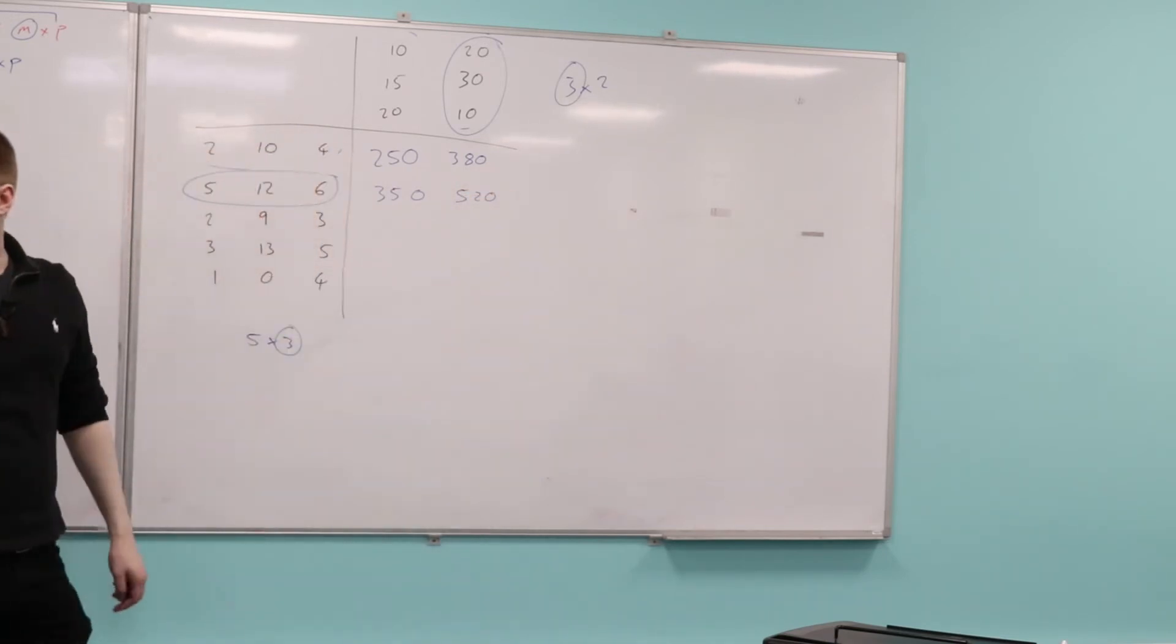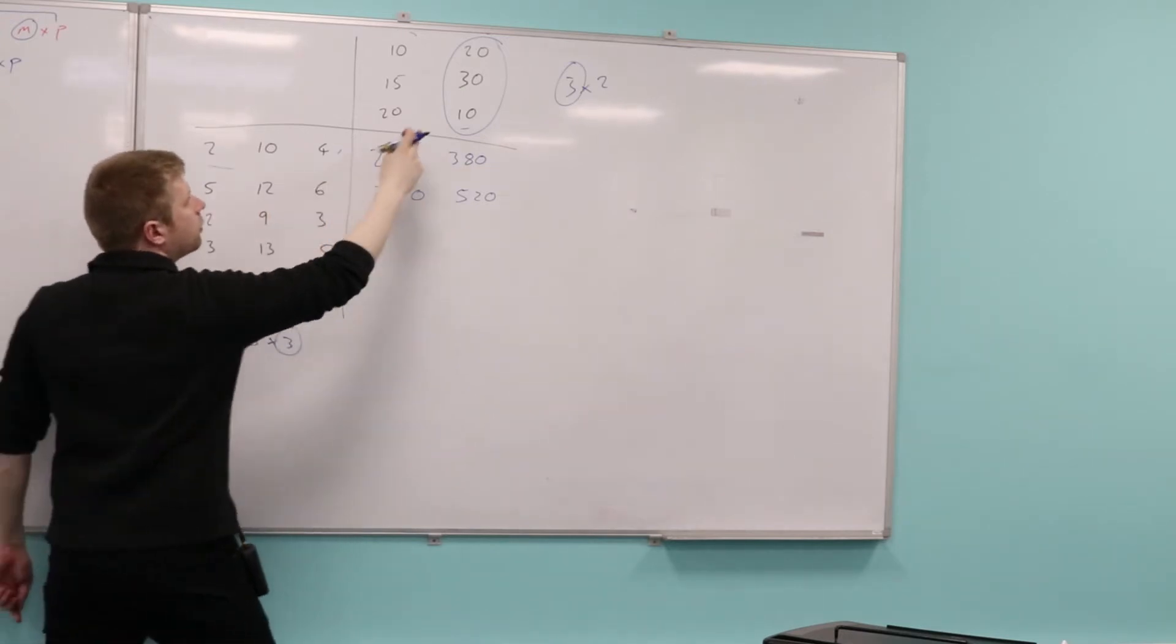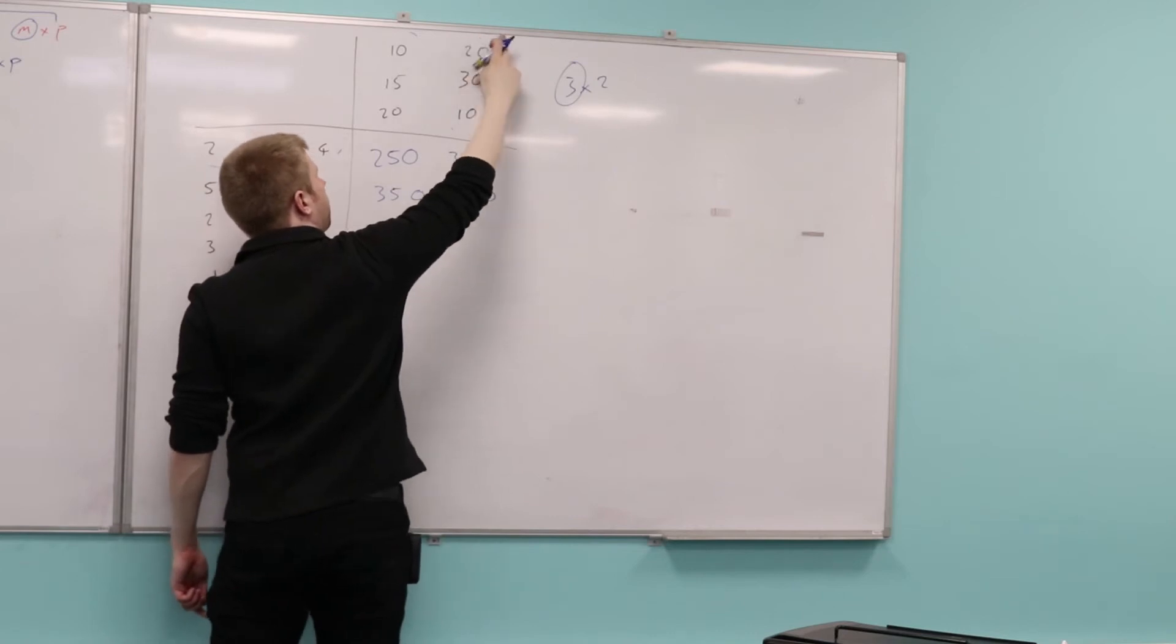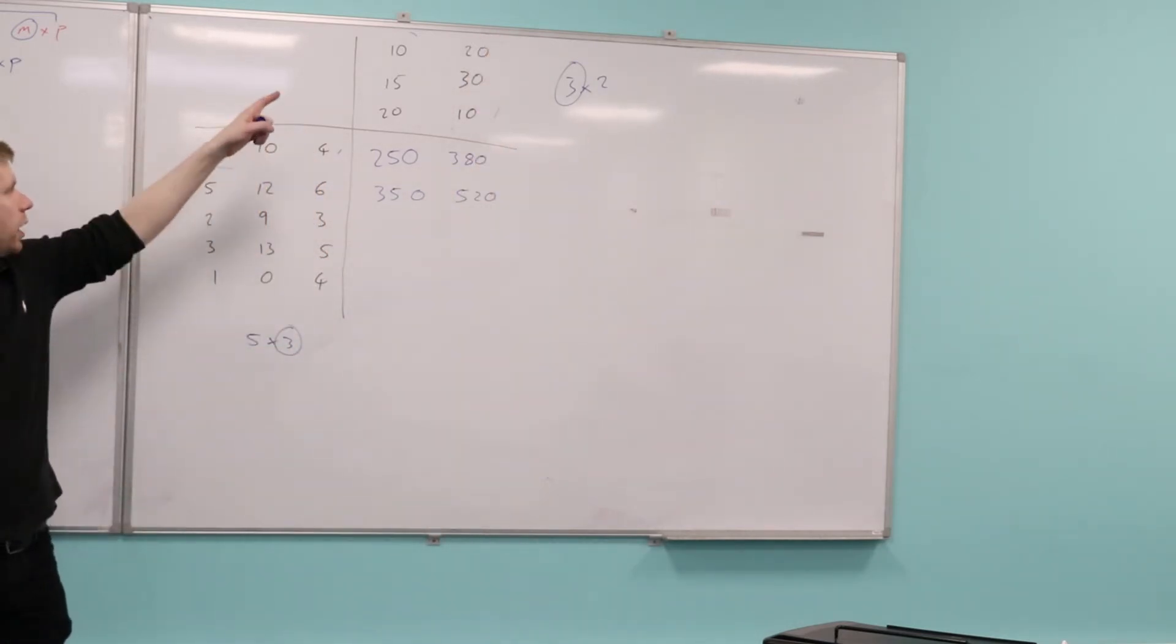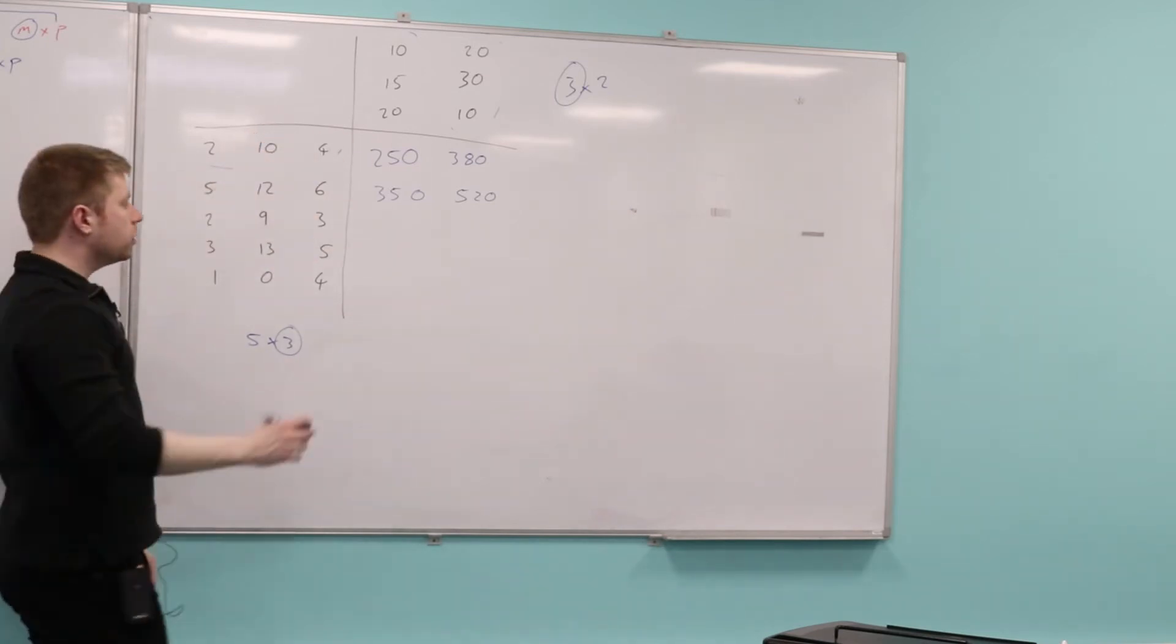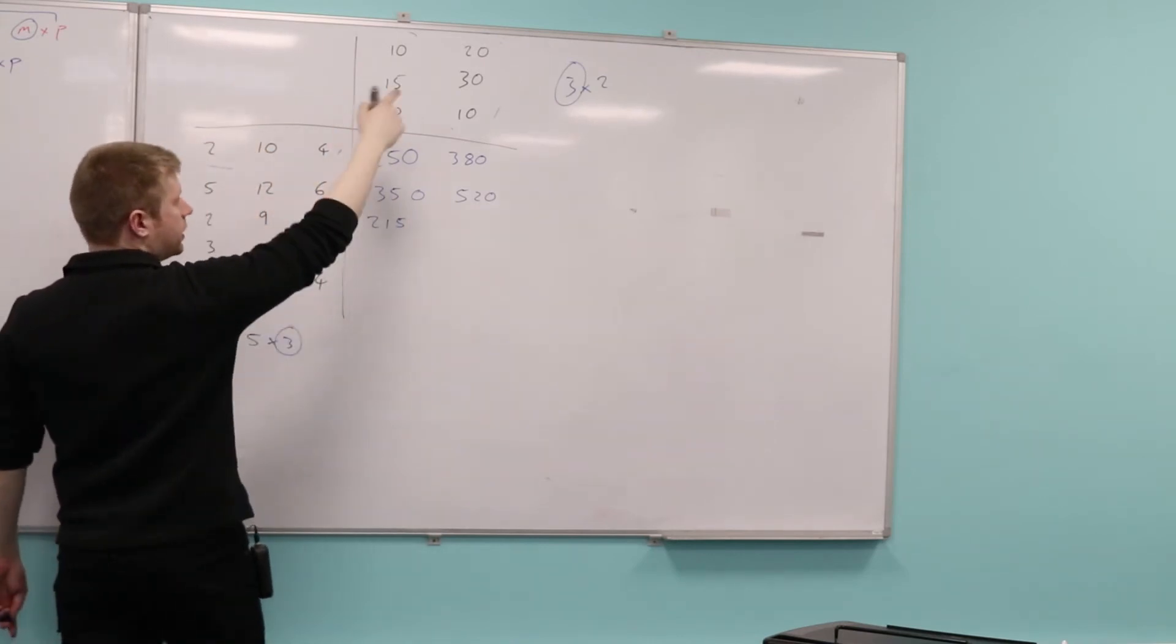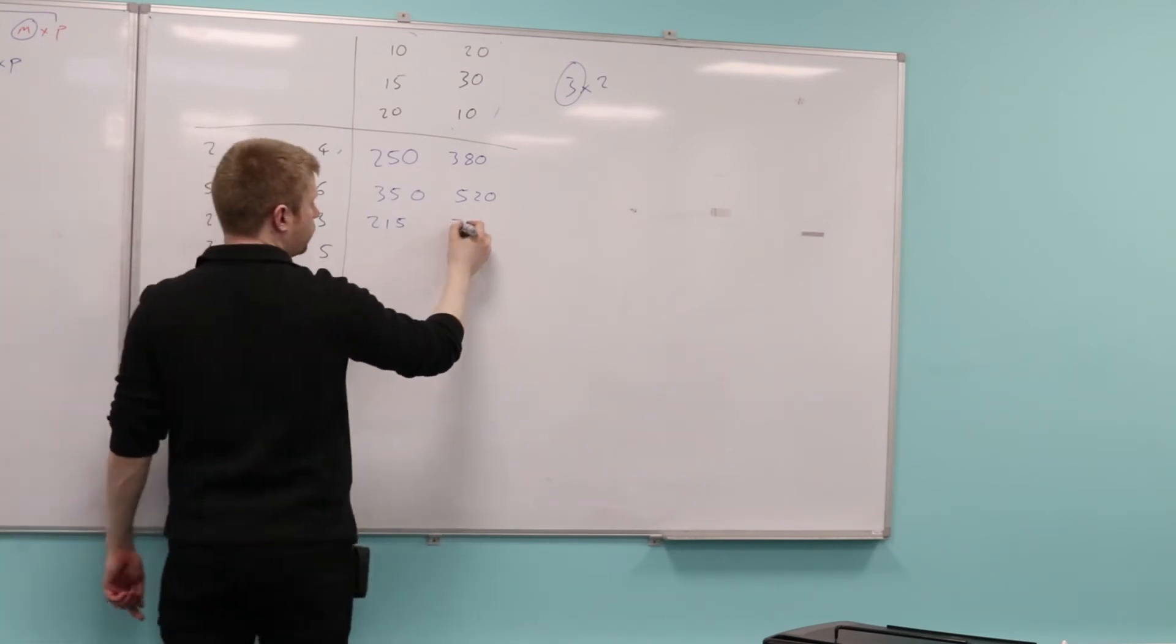Are you happy what element's going to go here? So it would be 2 times 10 plus 9 times 15 plus 3 times 20. 215. What element goes here? 2 times 20 plus 9 times 30 plus 3 times 10, which is 340.